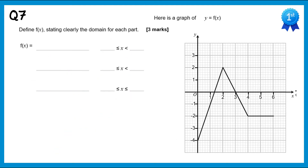For this question we also have a graph and need to write down its function. The first part is a straight line. Drawing a gradient triangle, the gradient is 3, so it will be 3x. We can see the y-intercept at negative 4, so the graph is 3x minus 4, for x values from 0 to 2.